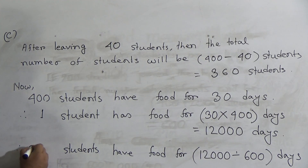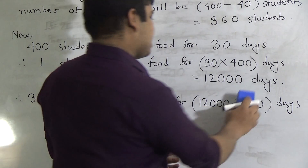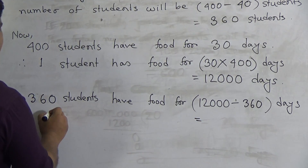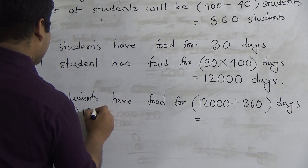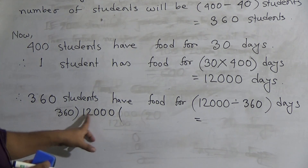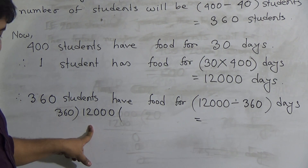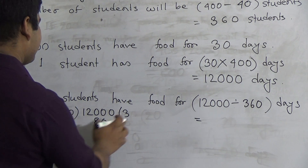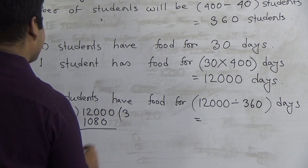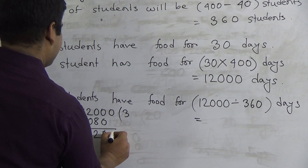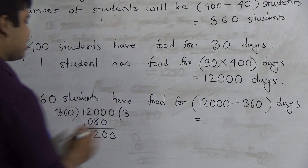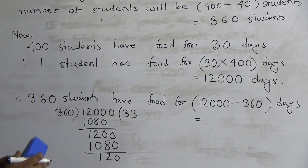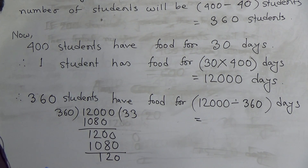Therefore, 360 students have food for 12,000 divided by 360 days. We show the division: divisor is 360 and dividend is 12,000. 120 is smaller than 360, so we consider 4 digits: 1200. 360 goes into 1200 three times, giving 1080. Subtracting gives 120. Then 1200 again: 360 goes in 3 times giving 1080, remainder 120. So quotient is 33 and remainder is 120.